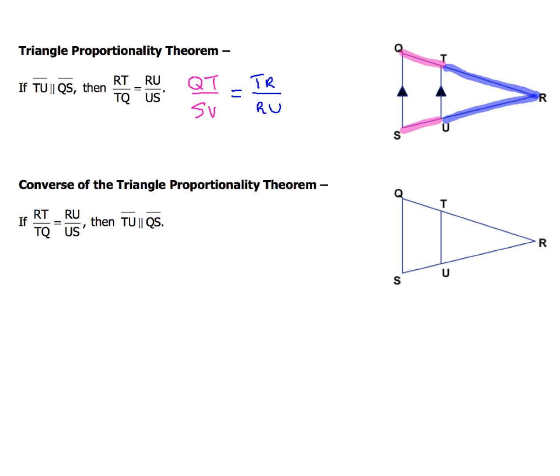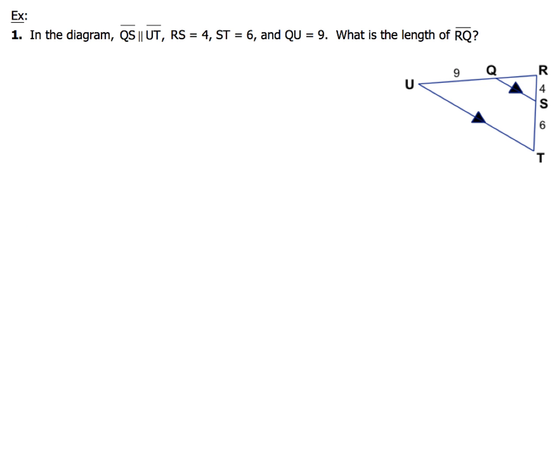Go ahead and get your highlighters out, because you're definitely going to need to use that here. That's going to really help you kind of keep things organized and straight here. Now, as we look at example number one, it says in our diagram, QS and UT are parallel. RS is 4, ST is 6, and QU is 9. What's the length of RQ? So we've got to find this piece QR. So what I'm going to do first is go ahead and just highlight.